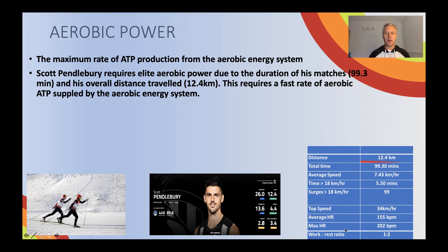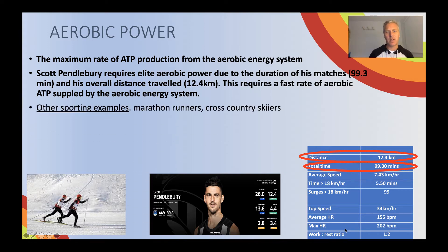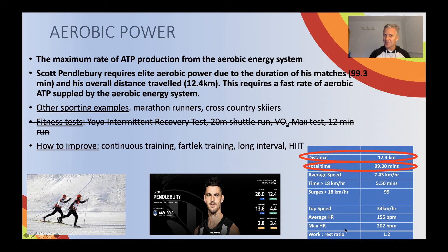You can see that I've used data: total time being 99.3 minutes and distance of 12.4 kilometres indicates that aerobic power is very important for Scott Pendlebury. There are some other sporting examples of athletes that require aerobic power — marathon running, cross-country skiers are the granddaddies of them all in terms of aerobic power. Fitness testing is out, and we'll do another video on the methods you could use to improve aerobic power later on.